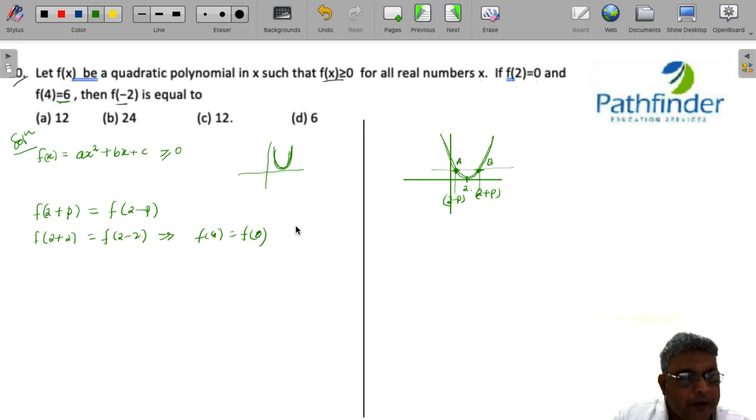And f(4), we have already been given to be equal to 6. And you also have the value of f(2) as 0. Now, if you put the value of 2 in place of x. So if we calculate f(2), we will get 4a plus 2b plus c and this is equal to 0. This is equation number 1.